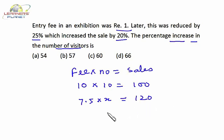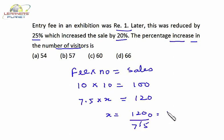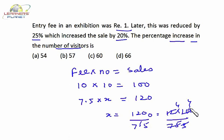We have to find the number of visitors and the sales is increased by 20 percent, so the new sales is 120. So x equals 120 divided by 7.5, which is 16. Initially the number of visitors were 10 and now they are 16, so there is a 60 percent increase in number of visitors. I hope you are clear.